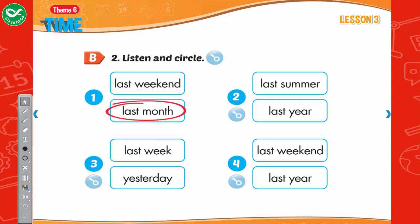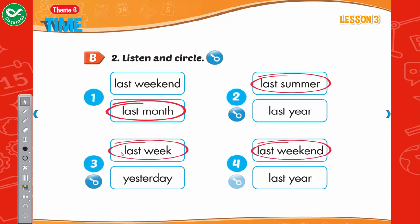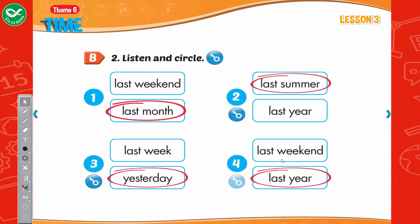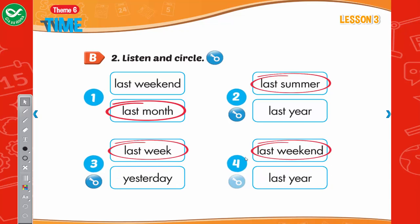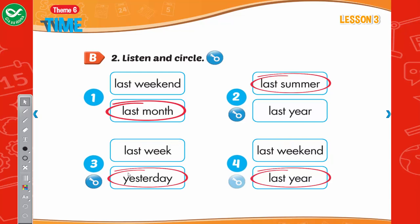Listen and circle. 2. We went to the beach last summer. How was it? It was really fun. 3. We went to band practice last week. How was it? It was great! 4. We went to the farm last year. And how was it? It was awesome!